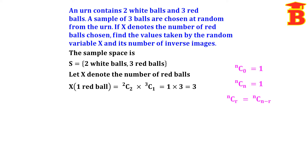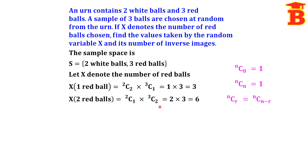For 2 red balls: we choose 2 red from 3 (3C2) and 1 white from 2 (2C1). Using NCR = NCN−R, 3C2 = 3C1 = 3, and 2C1 = 2. So 2 × 3 = 6 possibilities.